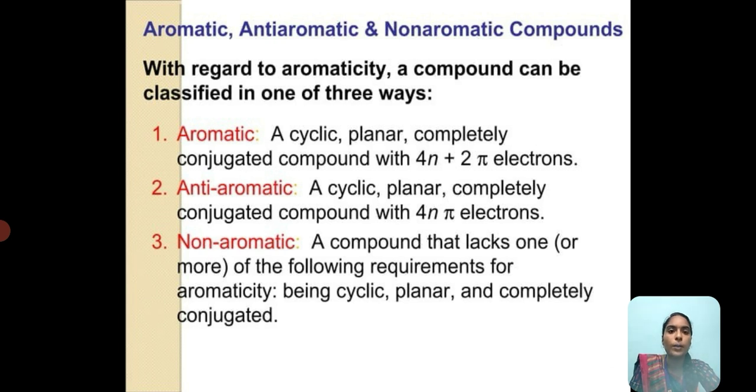Aromatic, anti-aromatic, and non-aromatic compounds follow specific rules: 4n+2 pi electrons represent aromatic compounds, and 4n pi electrons represent anti-aromatic compounds. A compound that lacks one of the requirements of aromaticity—being cyclic, planar, and completely conjugated—is non-aromatic.